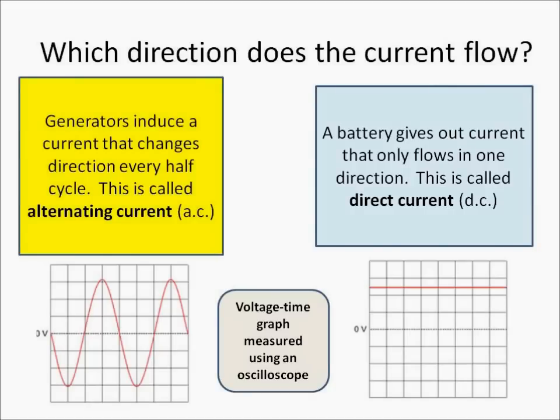Generators induce a current that changes direction every half cycle — this is called an alternating current, or AC. A battery, on the other hand, only gives a current that flows in one direction — this is called direct current, or DC.